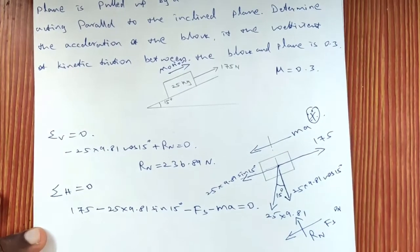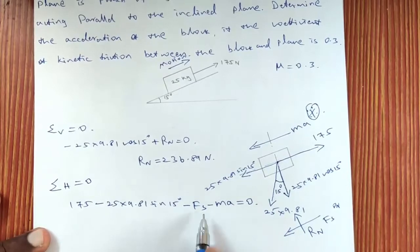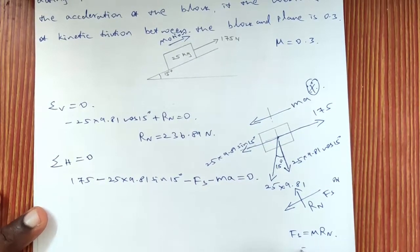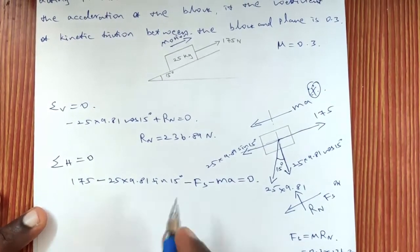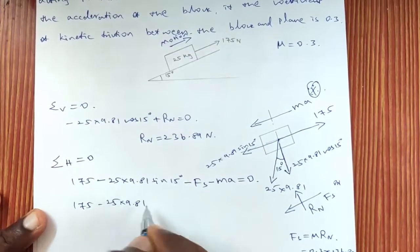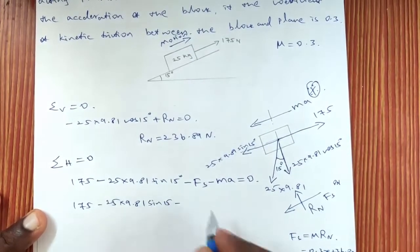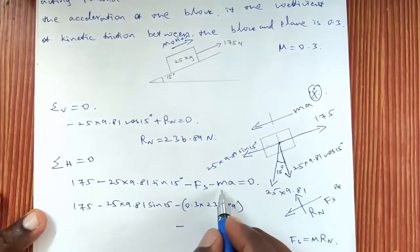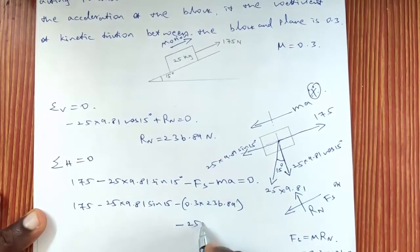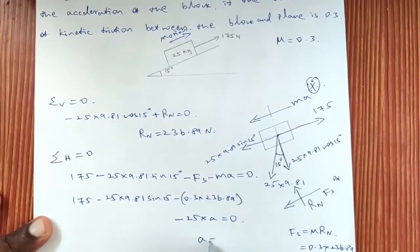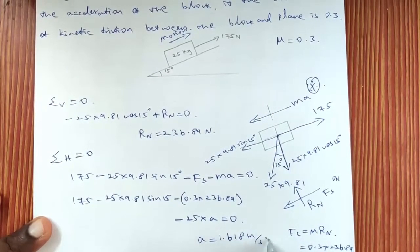We know that Fs = μ × RN = 0.3 × 236.89. Substituting all values: 175 − 25 × 9.81 sin15° − 0.3 × 236.89 − 25a = 0. Solving this equation, we get a = 1.618 m/s².